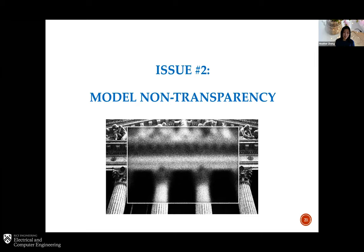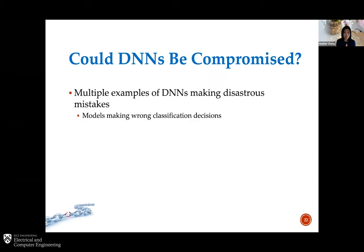The second important challenge is to be aware of model non-transparency. When you train a machine learning model, it's essentially a black box. The data goes in, the model trains, it comes out and gives you the right result, but it's very difficult to interpret how the machine reached that. There's no explainable logic that humans can really understand. This non-transparency creates a lot of vulnerability to attacks. There are already multiple examples of DNNs making wrong decisions — models making wrong classification results. A lot of the time this is because they've never seen the data, but also because attackers inject certain triggers into the input that trick the DNN into making the wrong decision.